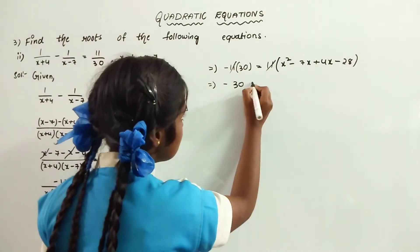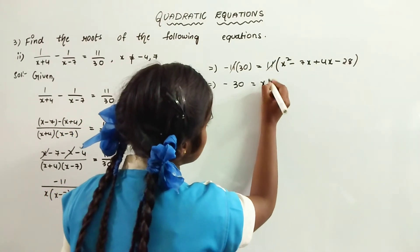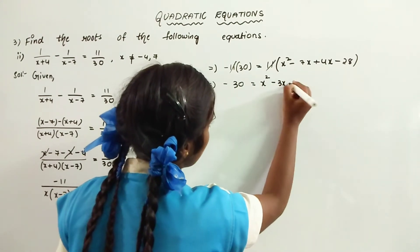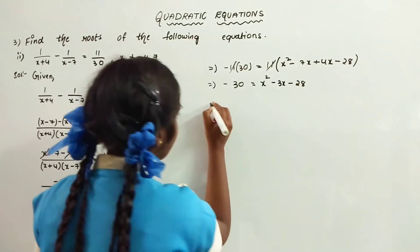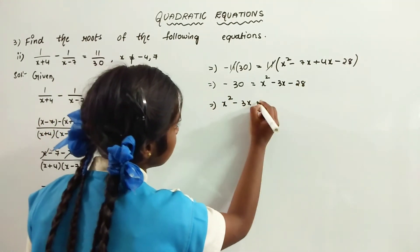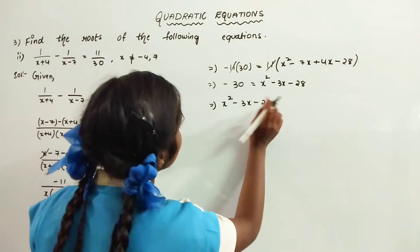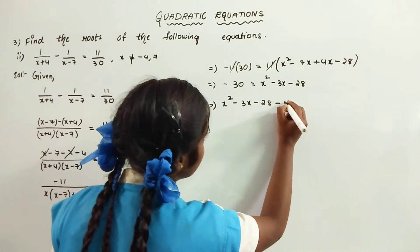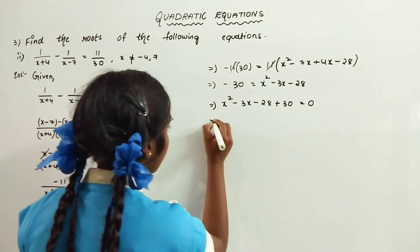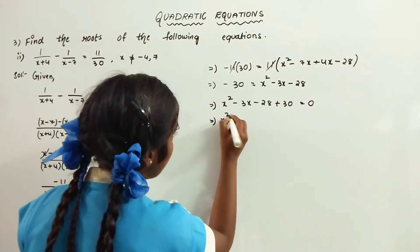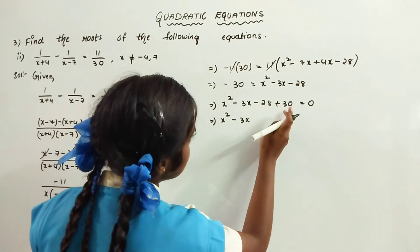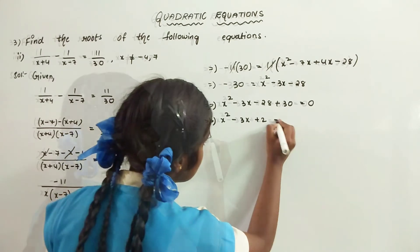That implies minus 30 is equal to x squared minus 3x minus 28. So x squared minus 3x minus 28 plus 30 equals 0, giving us x squared minus 3x plus 2 is equal to 0.